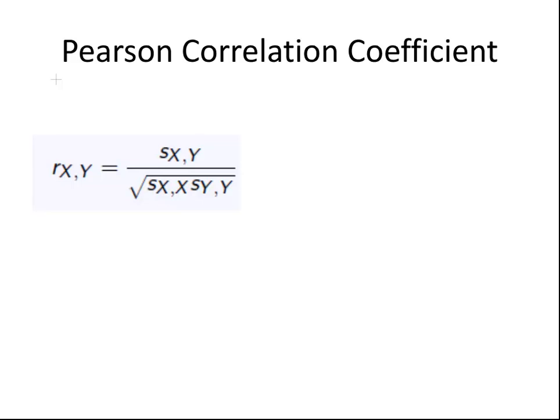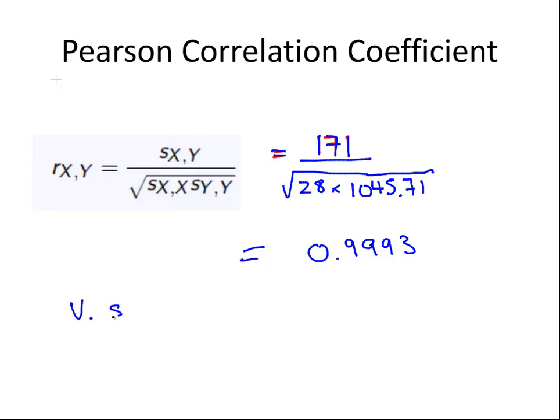We found that the sum of sxy was 171. 171 divided by the square root of 28 times 1045.71. That would work out to be approximately 0.9993. So the correlation coefficient is 0.9993, and that indicates a very strong positive linear relationship.